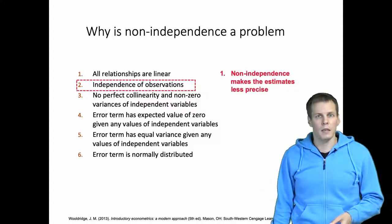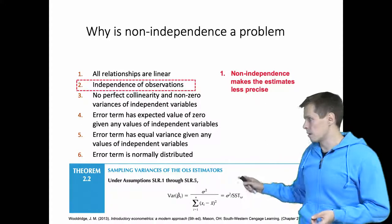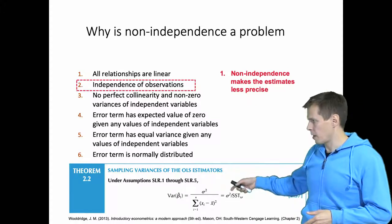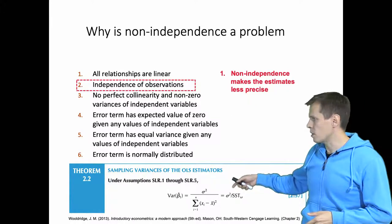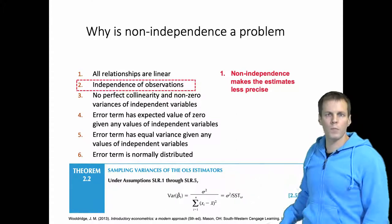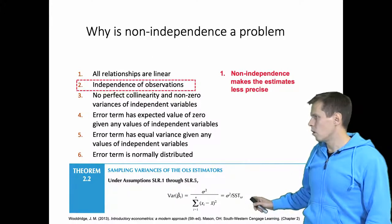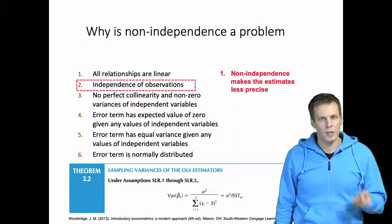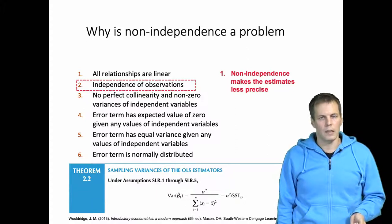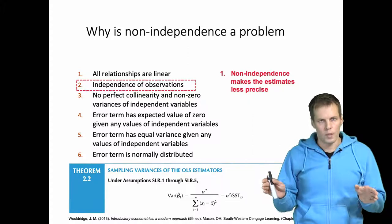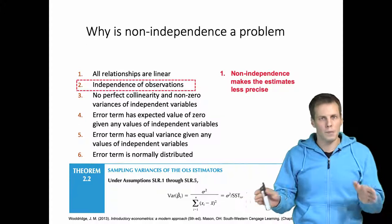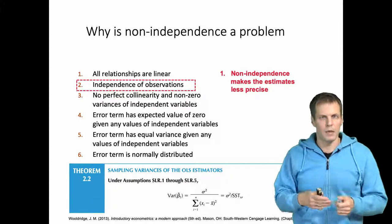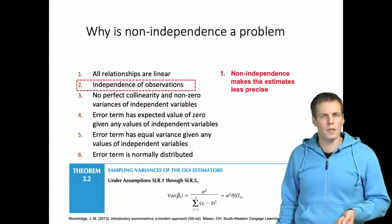The real problem is in the standard error formula, which is derived based on the variance formula where we plug in the estimated variance of the error term for sigma and the sum of squares total. This equation only depends on the variance of the error term, the variance of the predictor variable, and the sample size. If we have a clustering effect in the data, estimates will be less precise even though those three quantities are the same — this formula doesn't take clustering into account.